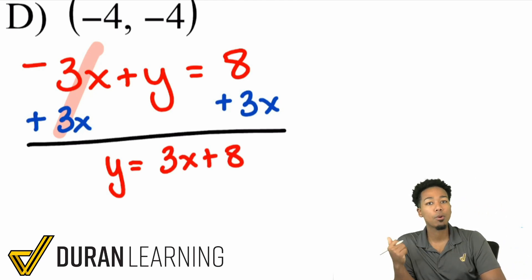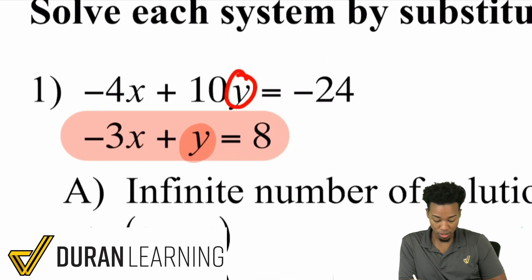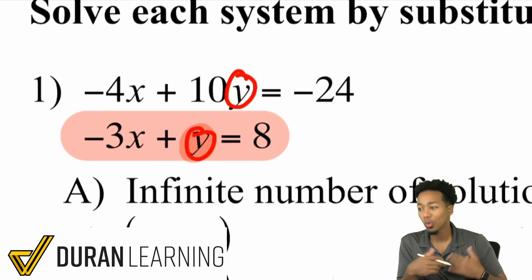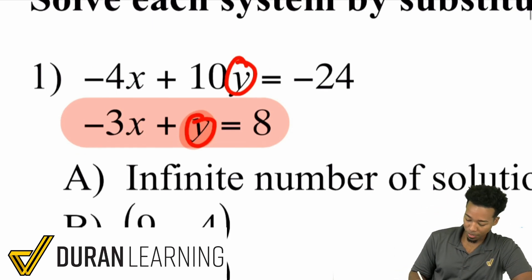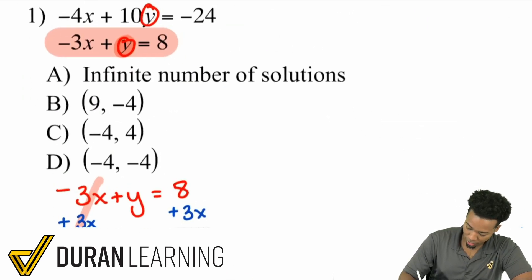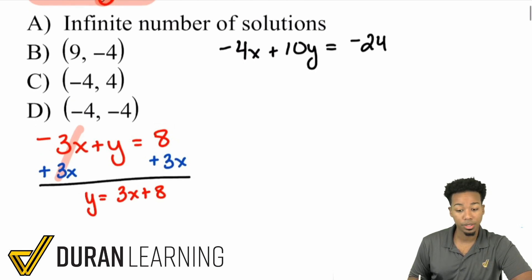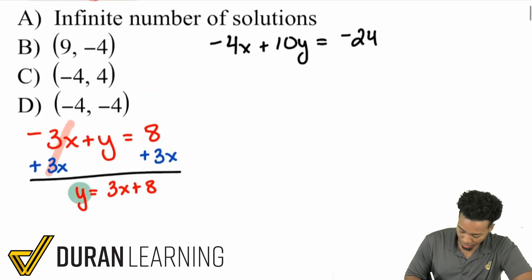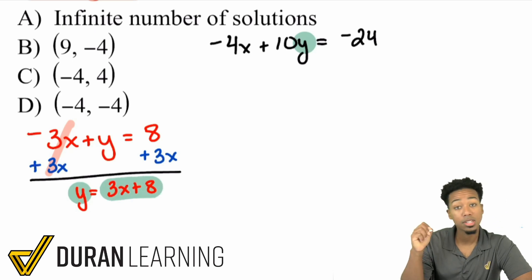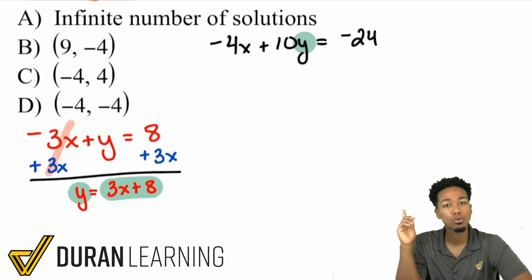That's exactly what we want, because now we can substitute Y into the other equation. When it comes to systems, both equations are represented by the same variables, so the Y in this equation is the same as the Y in the other. We're allowed to substitute. We just realized that Y is equal to 3X plus 8.